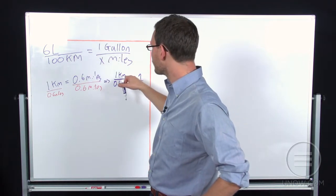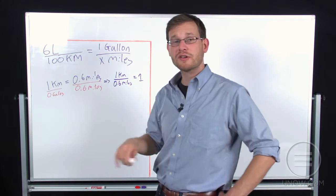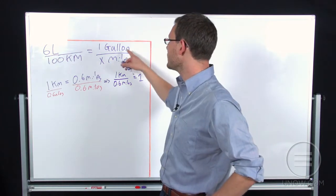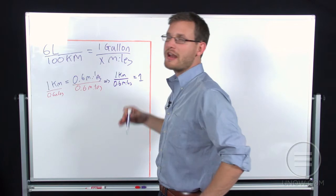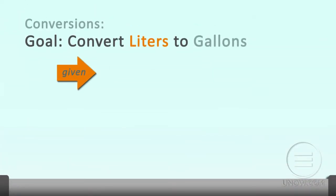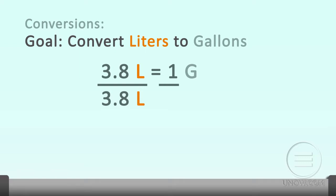So this is going to tell me how to get from kilometers to miles. But I'm also going to need to know how to get from gallons and liters. So while we're writing down all our facts, why don't we write that down as well. So there are 3.8 liters in one gallon. So I divide by 3.8 liters. And then this gives me my last unit conversion I need, which is that 1 equals 1 gallon per 3.8 liters.